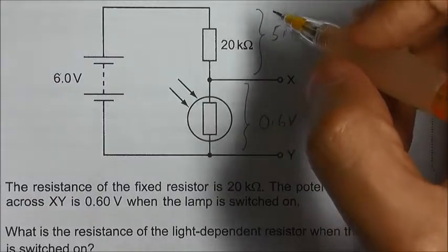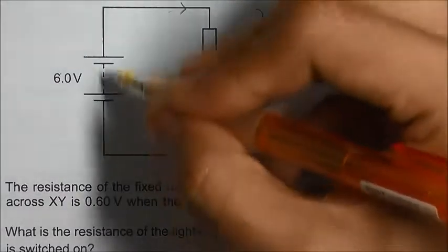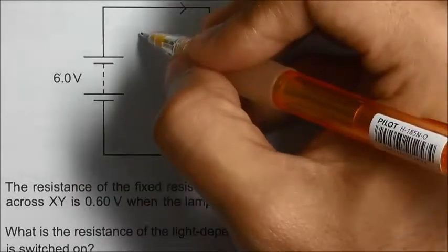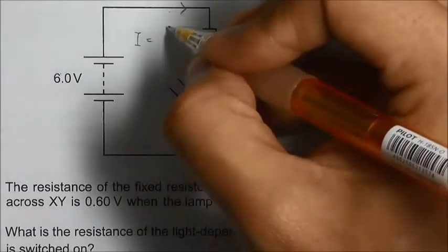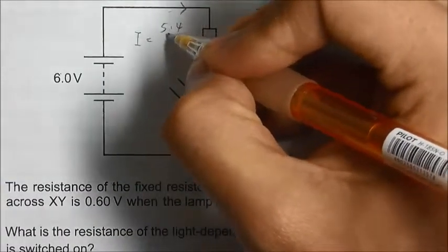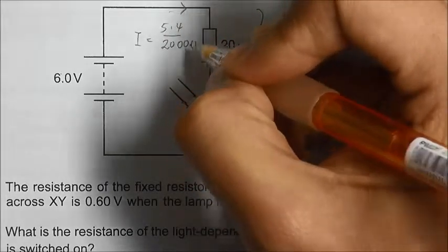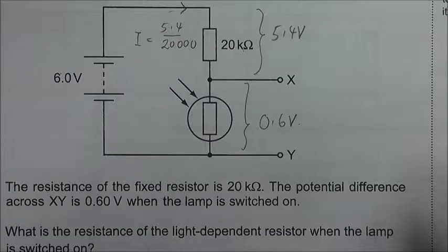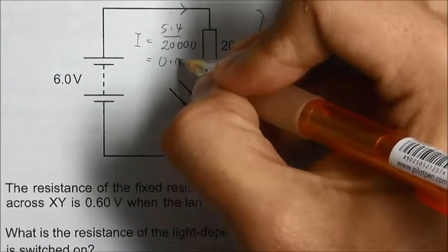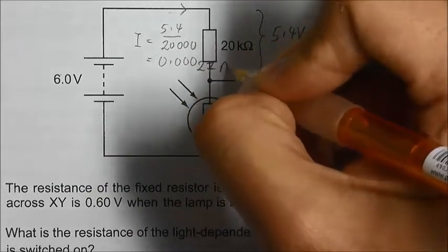With this, we can calculate what is the current that flows in this series circuit. The current should be the voltage divided by the resistance. So 5.4 divided by 20,000, we will get 0.00027 ampere.